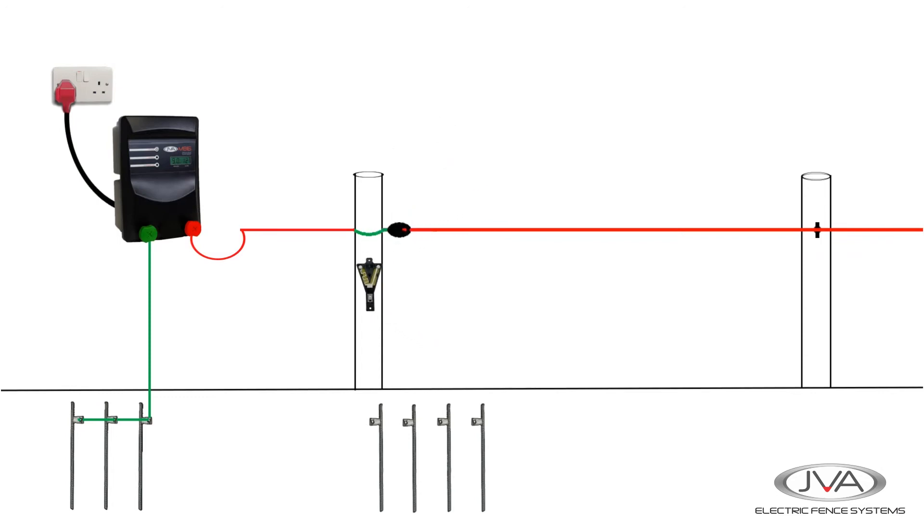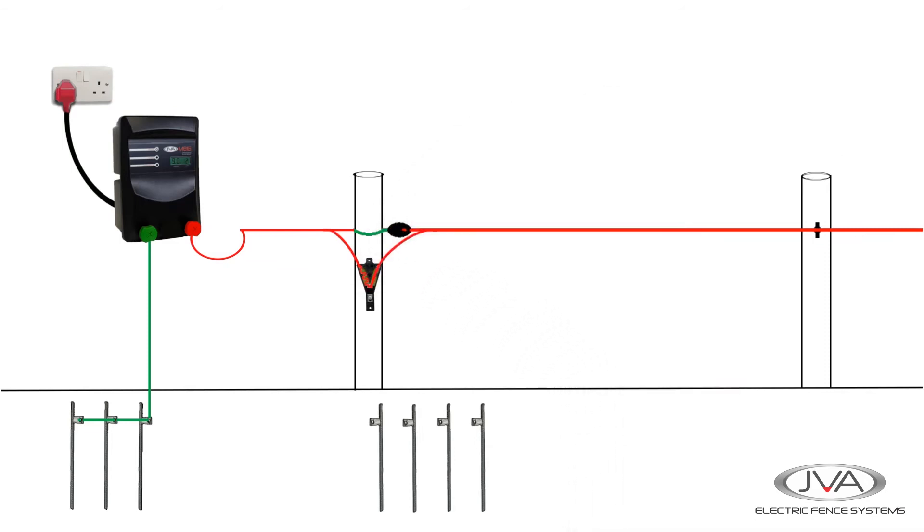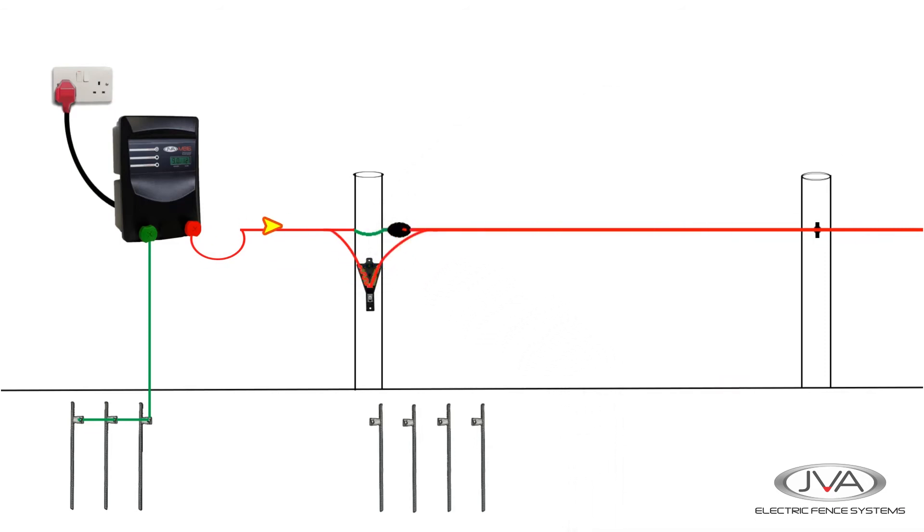Under normal circumstances every time the energizer pulses the power goes through the V and down, through the V and down, through the V and down. The pulse easily makes it round the bend and onto the fence.